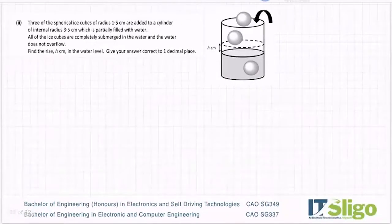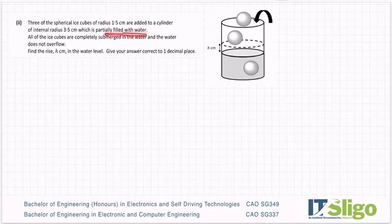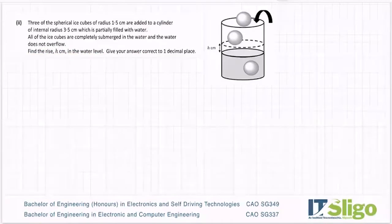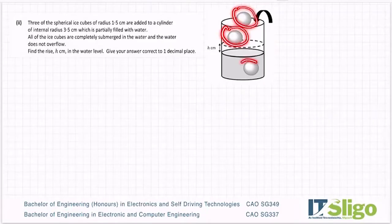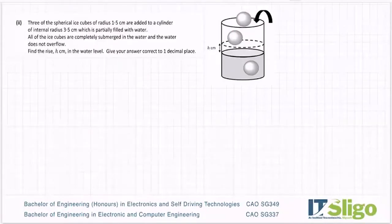And I'm getting 9 over 2 pi centimeters cubed for that one. So that just means I haven't multiplied in the 3.14, that's all it means when it's in terms of pi. It's just a more accurate way of leaving it because you don't end up rounding the decimals. Three of these cubes of radius 1.5 are added to a cylinder of internal radius 3.5, which is partially filled with water. All of the ice cubes are completely submerged in the water and the water does not overflow. Find the rise h of the water level. Give your answer correct to one decimal point.